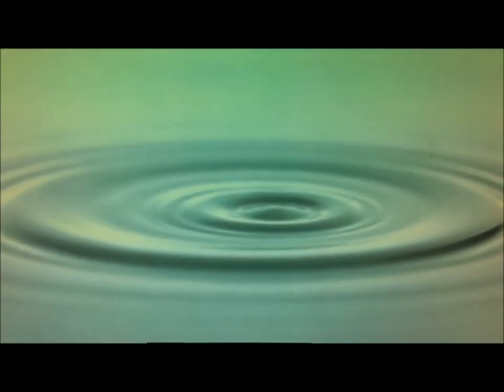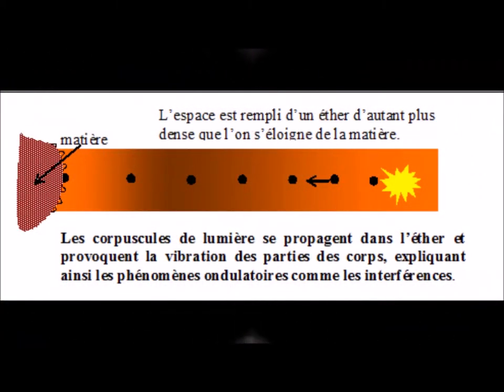The corpuscles of light, by encountering matter, would put in vibration the ether included in bodies. The light would not be undulatory, but would have undulatory effects. Newton justified his corpuscular approach by the rectilinear propagation of light.